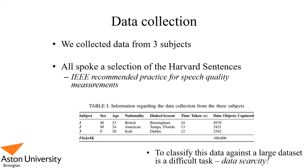We started with data collection. We collected data from three subjects who all spoke a selection of the Harvard sentences from the IEEE recommended practice for speech quality measurements. Table one shows the three subjects: two males and one female, aged 23, 24 and 28 respectively. One was British, one was American, and one was Irish. The British person was from Birmingham — that was myself. The American male was from Tampa, Florida, and the Irish female was from Dublin.